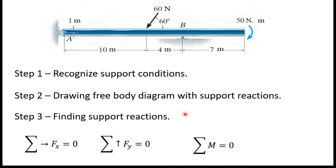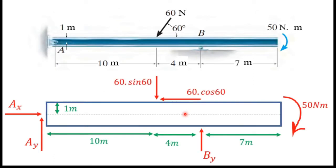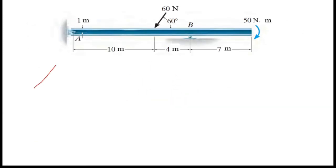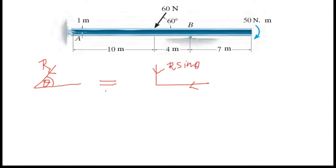This is the free body diagram. You can see there are two forces at A — a vertical force and a horizontal force — and a vertical force at B. The other forces are given in the problem. There is one applied force in the problem, but it becomes two forces. If you have a force at an angle theta, you can write it as two components: one vertical force and one horizontal force. The vertical component can be written as R sine theta and the horizontal as R cos theta.